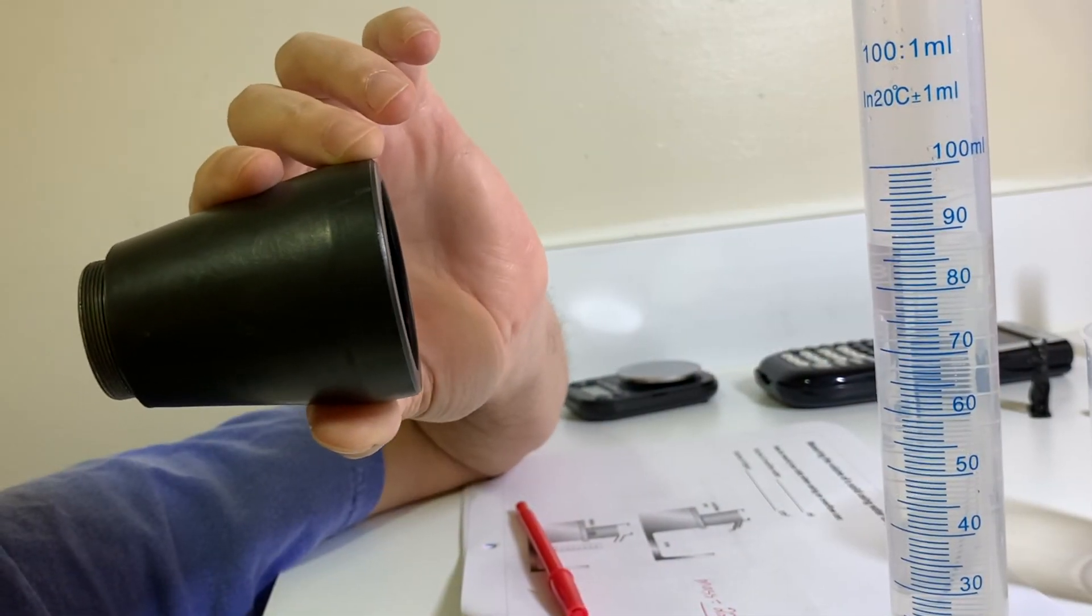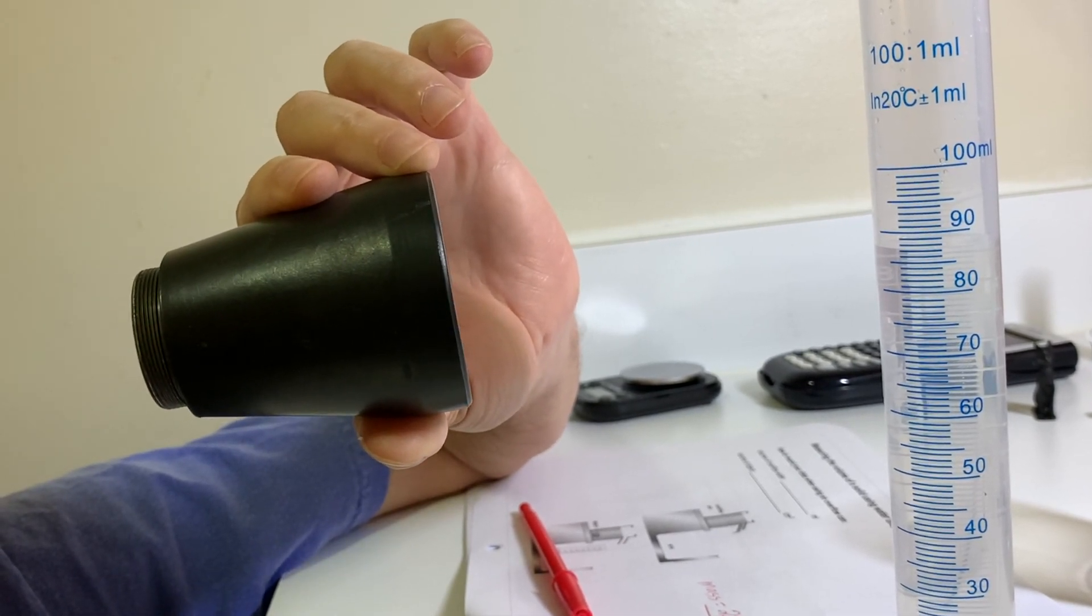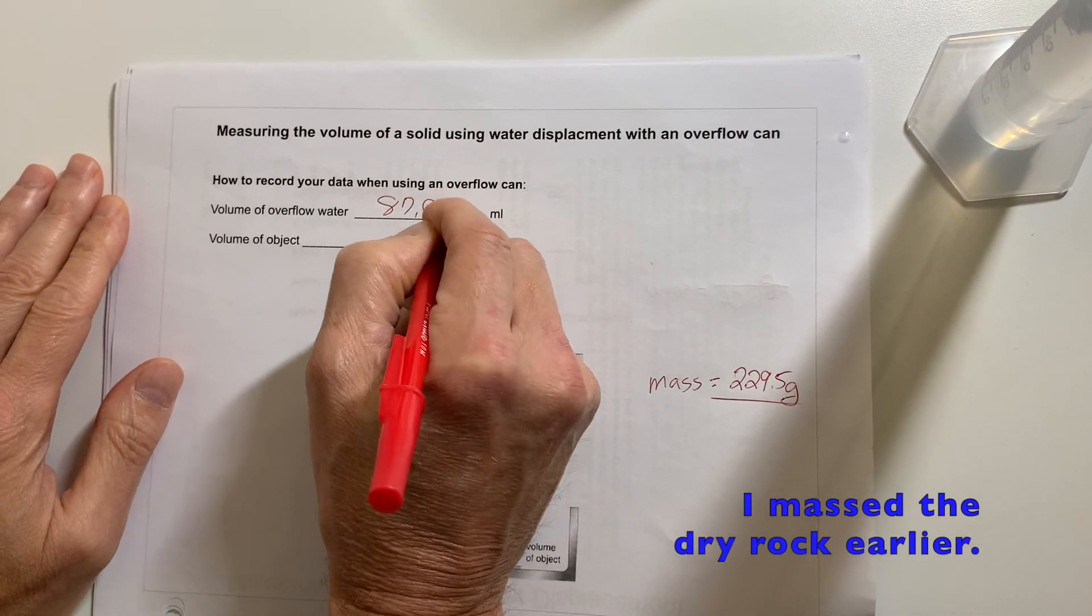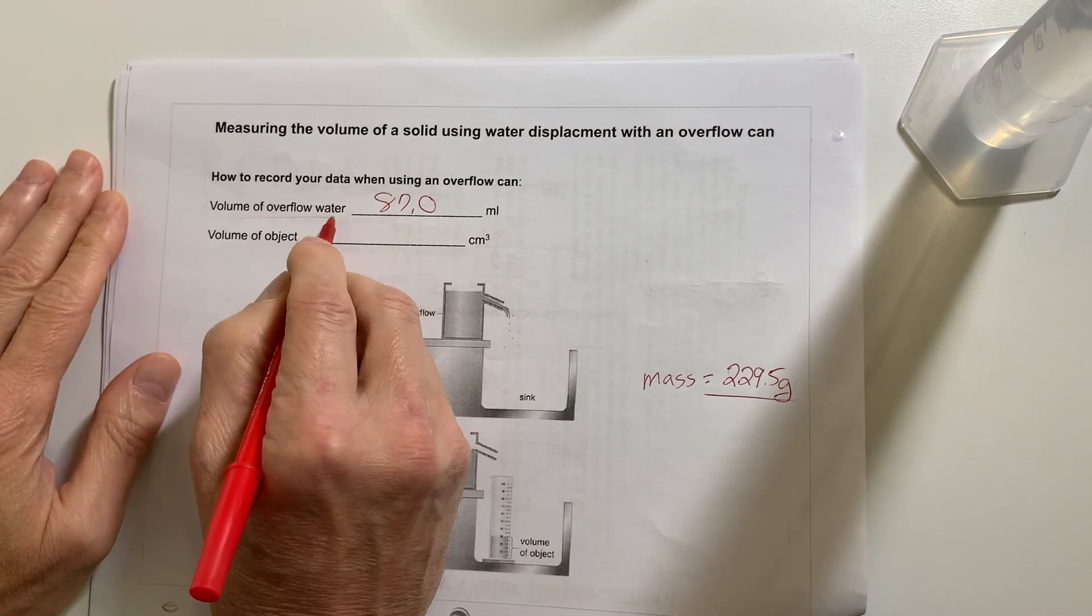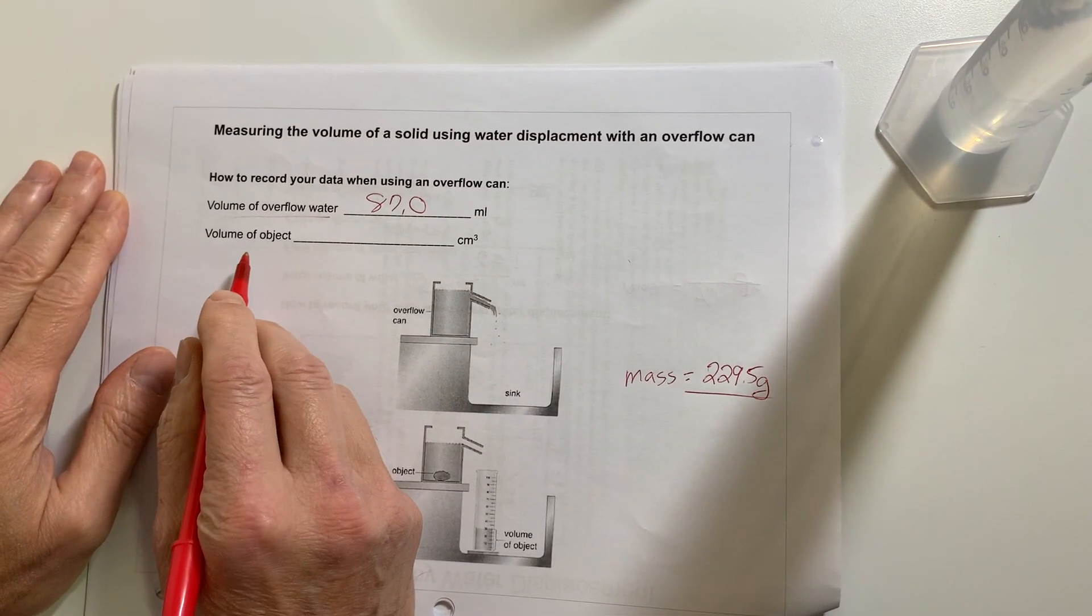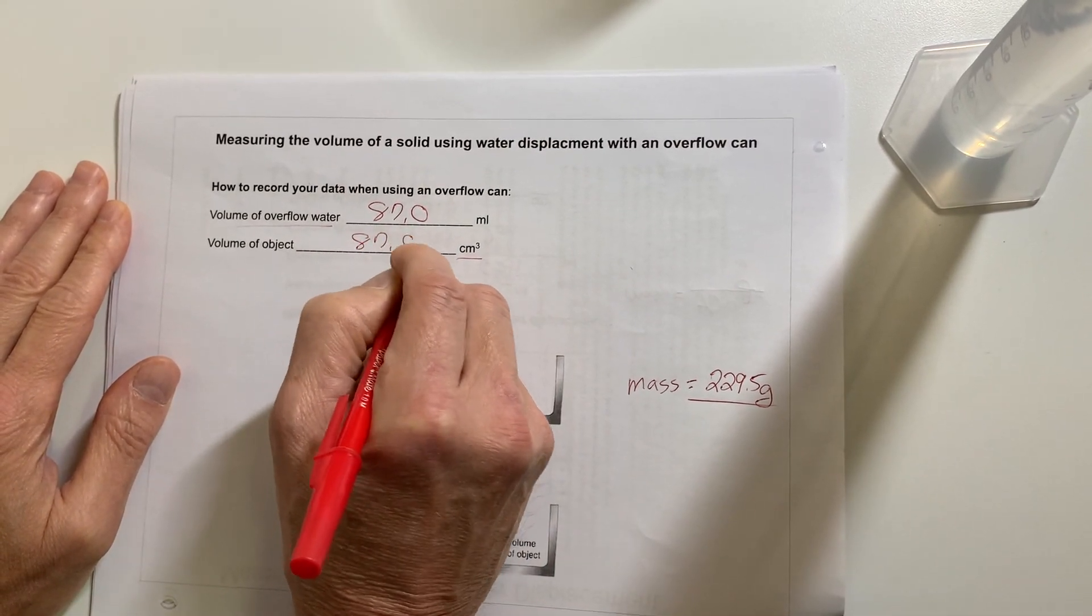And then, as before, it looks like it's right on the 87 line. So, of course, I have to call that 87.0. So I immediately record 87.0 milliliters for the volume of the overflow water. But, like I said, we know that's the volume of the object as well. So in cubic centimeters, it's 87.0.